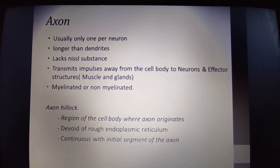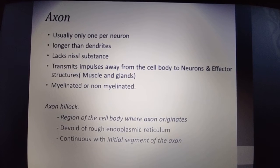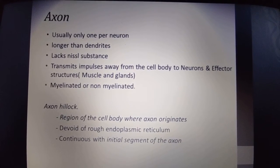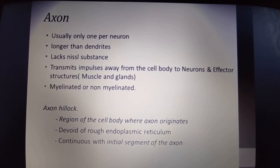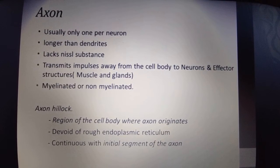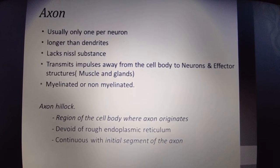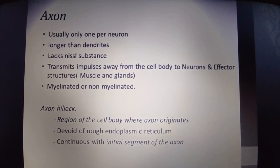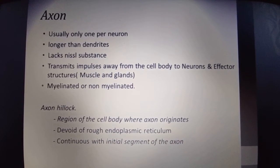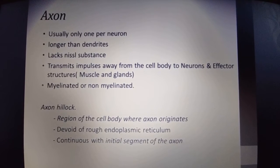The axon — there is usually one per neuron. Axons are longer than dendrites but lack Nissl substance. Their function is to transmit impulses away from the cell body to neurons and structures like muscles and glands. Axons may be myelinated or non-myelinated.